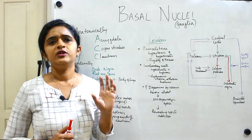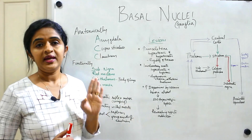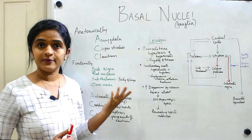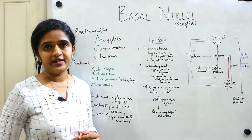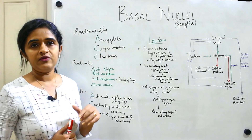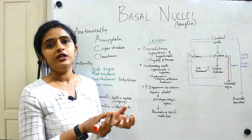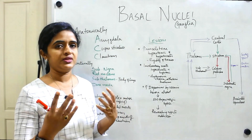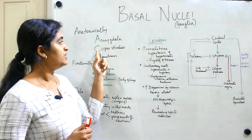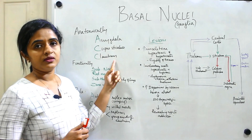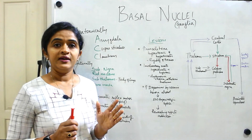When thinking about basal nuclei, I want you to remember the code ACC. With the help of ACC you can explain both the anatomical components and the function of the basal ganglia or basal nuclei. Anatomically speaking, A stands for amygdala, the first C stands for corpus striatum, and the second C stands for claustrum — so ACC: amygdala, corpus striatum, and claustrum.